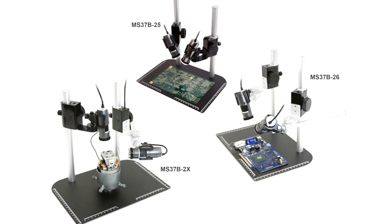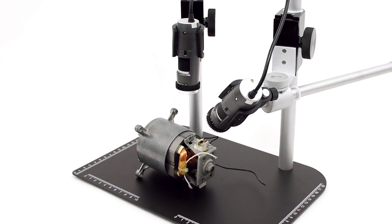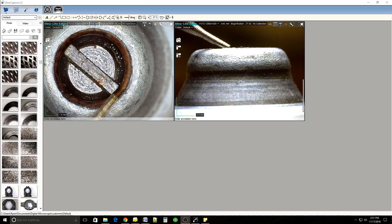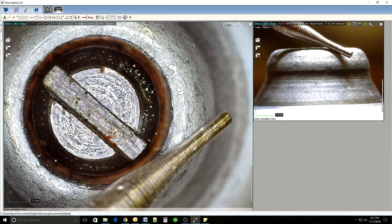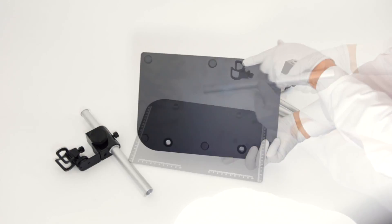Introducing the MS37B, a dual-scope inspection stand that uses a single sturdy base. The black solid base has line gauges to aid in positioning and size references.